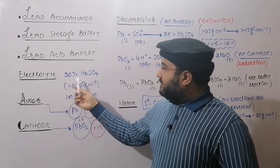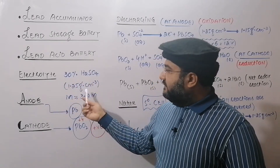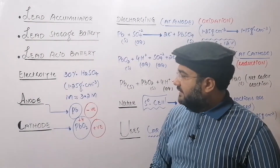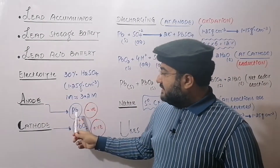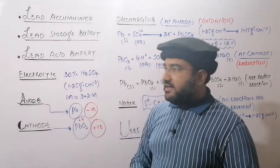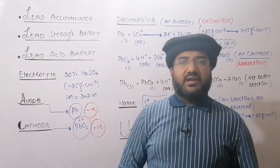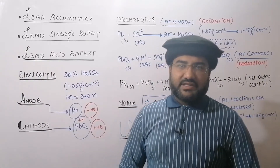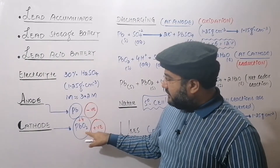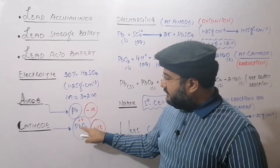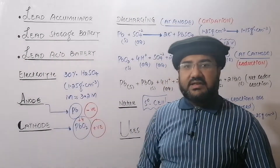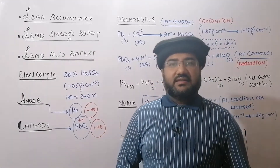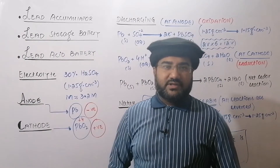The electrolyte is 30% sulfuric acid having a density of 1.25 g/cm³ and a molarity of approximately 3.2. The anode is spongy, porous lead plate which is negatively charged — and as you know, in galvanic cells the anode is the negatively charged plate. The cathode is made up of lead dioxide, which may also be called lead(IV) oxide, because the oxidation state of lead in this case is +4, and it is the positively charged plate.